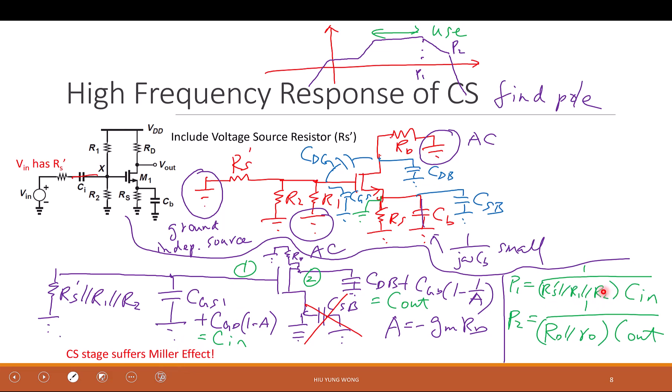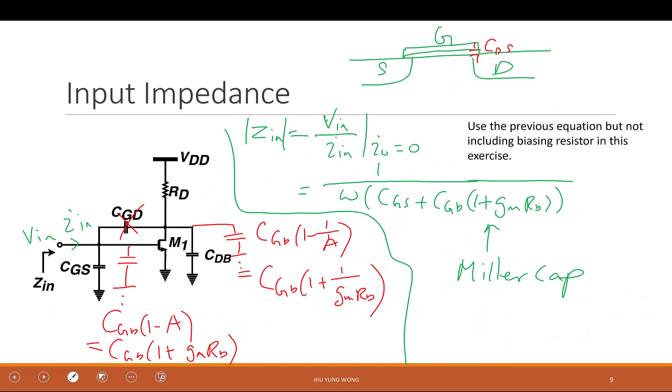And you can see from this pole, because your Cin is not just Cgs, it's Cgs plus Cgd times one plus gm*rd. So it's going to push your pole to lower frequency. If you did nothing about Miller effect, you just use Cgs and you calculate, you say oh my chance, my amplifier is going to work up to 20 kilohertz. But because of this Cgd, it only works at 10 kilohertz. Your product won't work, you need to redesign. Make sense? Any questions?